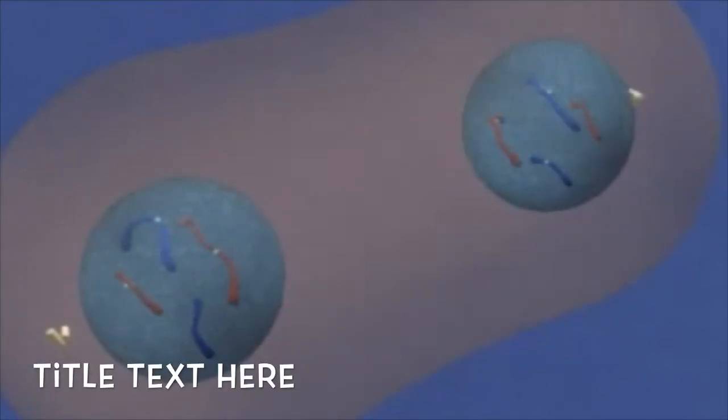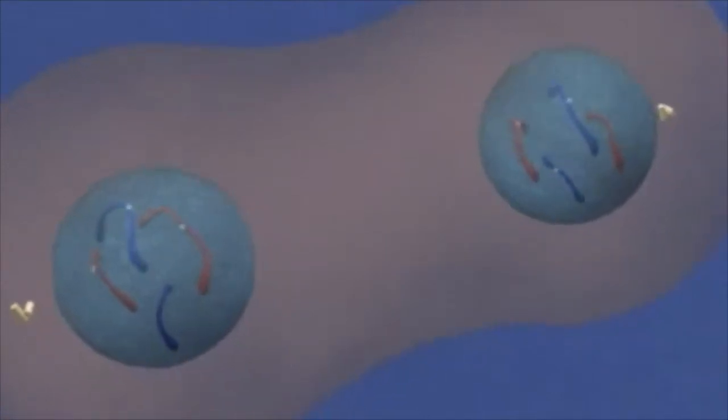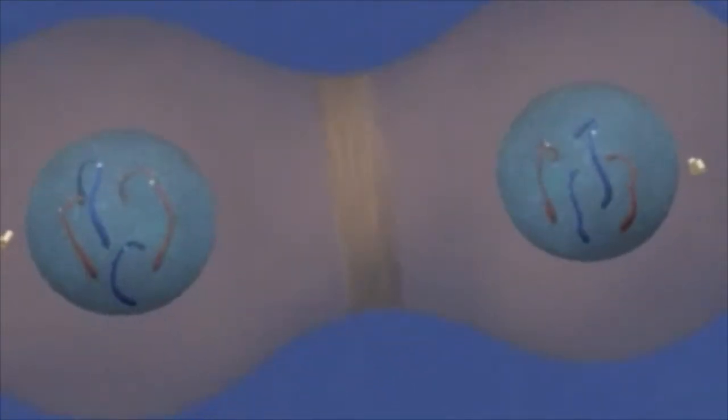During telophase, the nuclear membrane forms around each set of chromosomes and they condense. At this point, mitosis is complete.